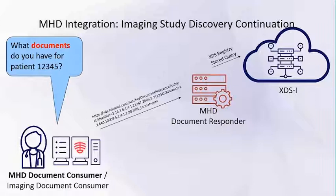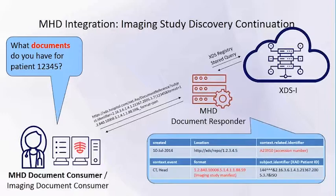MHD provides mapping capabilities to map the document reference to the XDS registry store query. It returns information as a FHIR document reference. Part of it will tell you that it is an imaging document because it shows the format as a manifest, and also in the context it provides information like the accession number. Normally, before WIA, you would have to retrieve the manifest, parse the manifest, and then retrieve the DICOM objects.